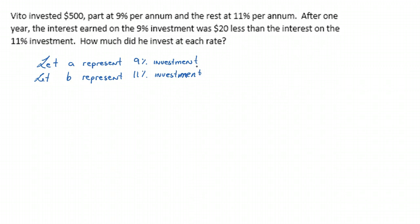So now that we have our let statements, we need to pull out two equations in this. So we see that we have a total of $500. So with these investment type problems, usually this will be one of our formulas, one of our equations, is that the sum of the two investments is whatever the total investment was. So in this case, A plus B is 500.